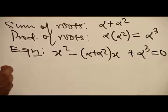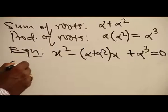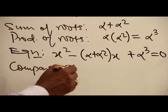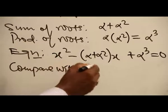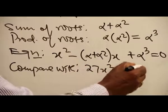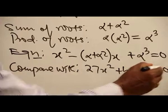We will now compare with 27x² plus bx plus 8 equal to 0.